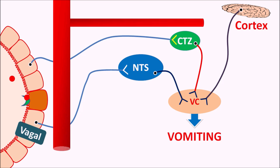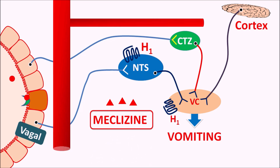In motion sickness, the NTS plays an important role — when more impulses are generated from the NTS, a vomiting reflex is observed. The NTS expresses H1 receptors, and the vomiting center also expresses H1 receptors. Meclizine acts as an antihistamine by blocking the H1 receptors on the NTS to inhibit its activity, and also acts on the H1 receptors on the vomiting center to inhibit the vomiting reflex. In this way, Meclizine reduces the vomiting reflex as well as symptoms associated with vertigo and motion sickness.